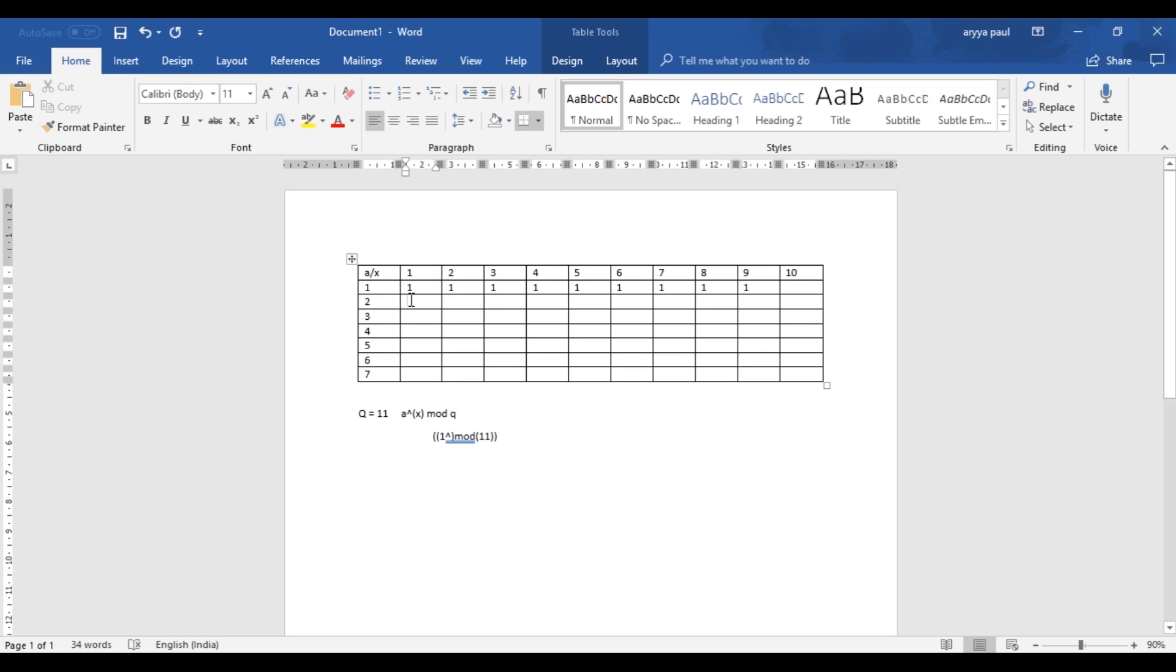When we come to 2, something interesting happens. 2 raised to 1 mod 11 is 2. 2 raised to 2 mod 11 is 4. Mod 3 is 8, and 2 raised to 4 mod 11 is 5, then 2 raised to 5 mod 11 is 10. Then 2 raised to 6 is 9, and 7 is 3, and 6, and then it's 1.